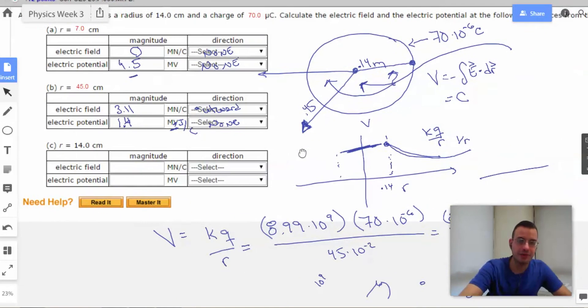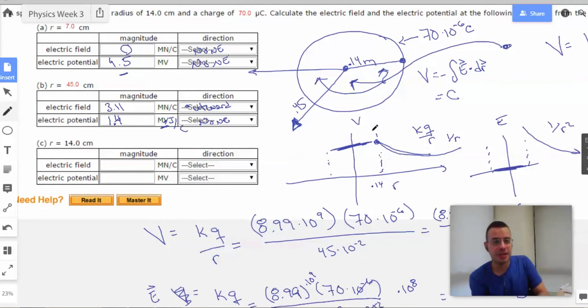This is going to be the exact same answers we had up here. Because looking at this graph that I crudely put together, the electric potential will be constant throughout the circle. And that will be the electric potential at the very edge of the circle. So this will be 4.5.